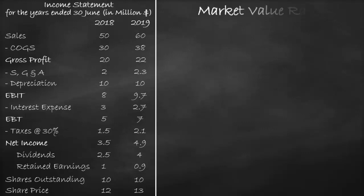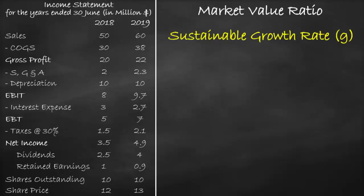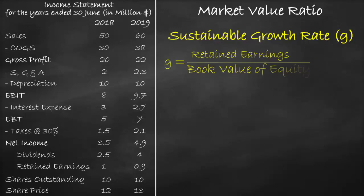An example of a market value ratio is the sustainable growth rate. The sustainable growth rate formula is retained earnings divided by book value of equity. We get retained earnings from the income statement and book value of equity from the balance sheet.